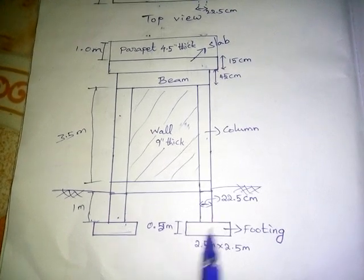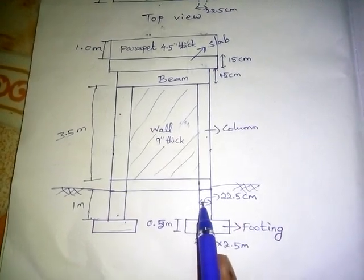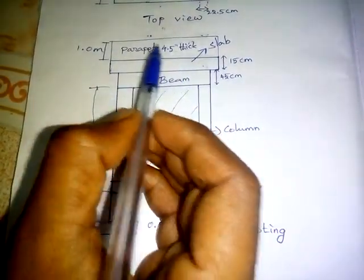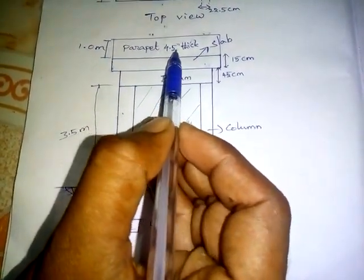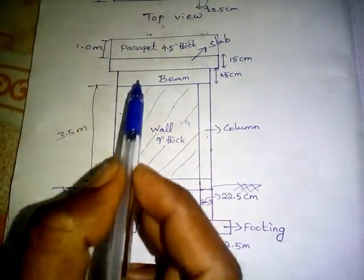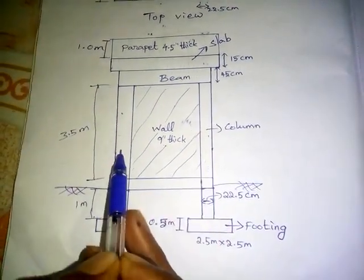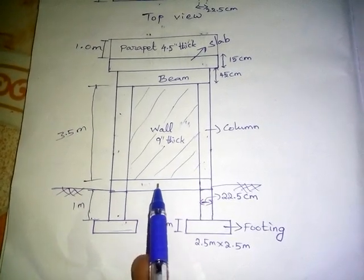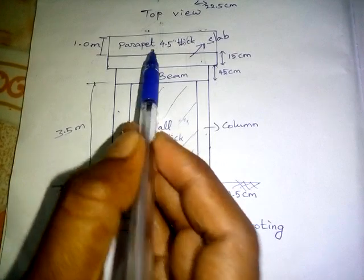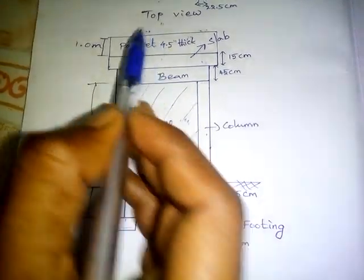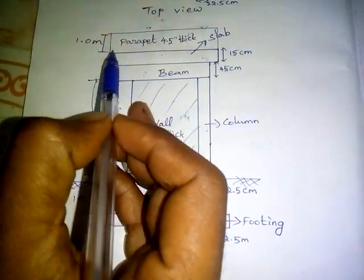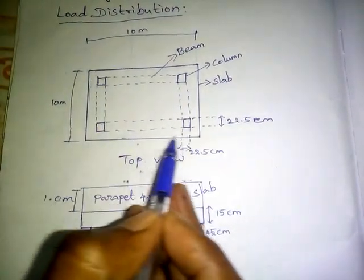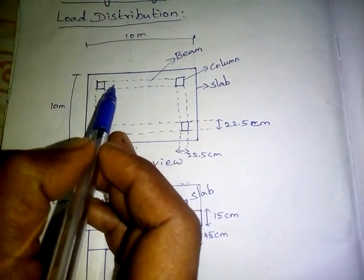This is the front view. This is the wall thickness. Column thickness is 22.5 cm, that is 9 inches. The parapet wall thickness is 4.5 inches. This is the wall. This is the column. This is the base level beam. This is the slab. This is the parapet wall. The parapet wall is the top view. This is the wall on the inner side.